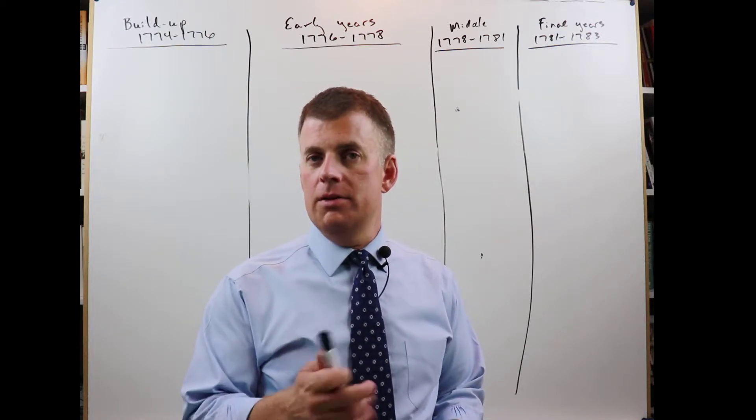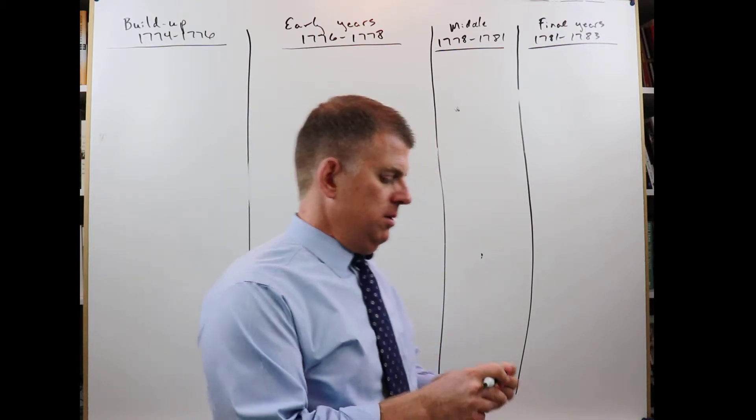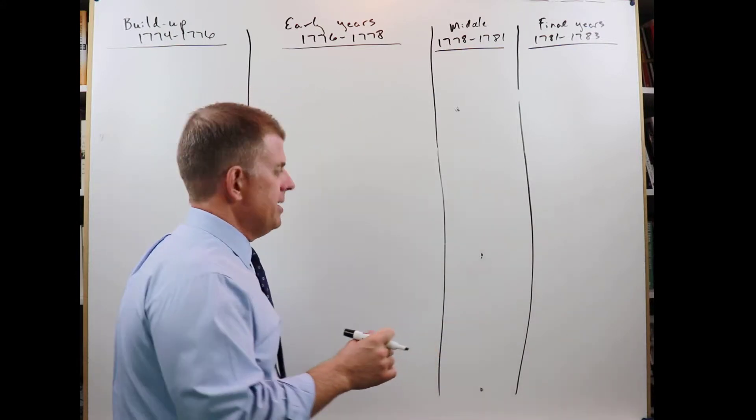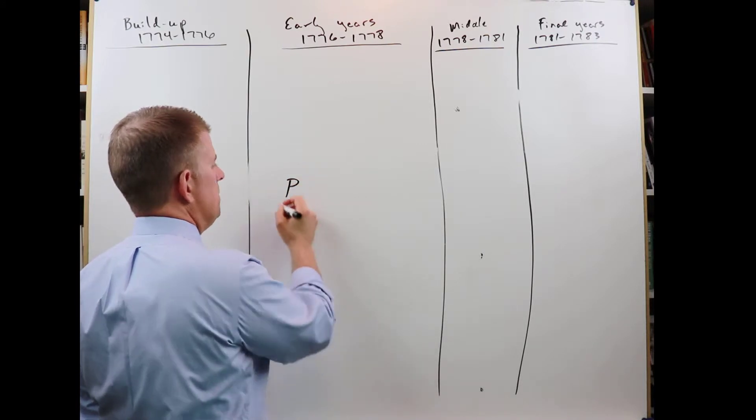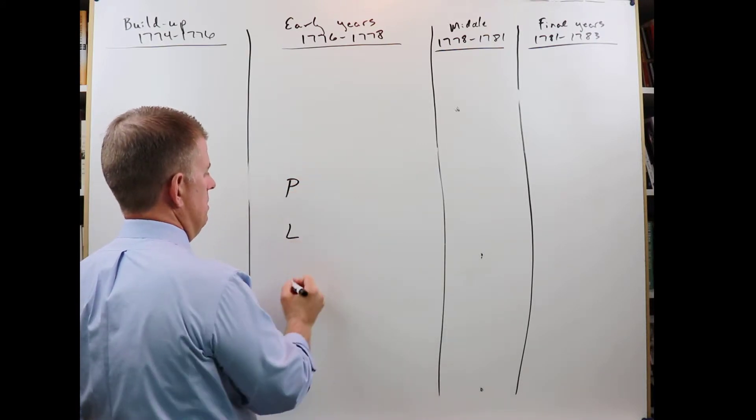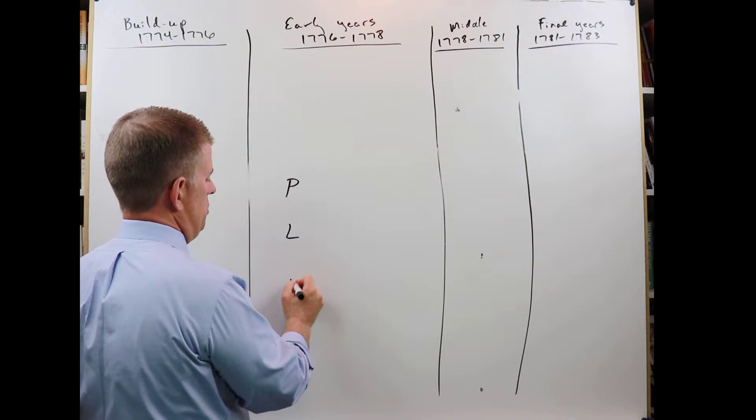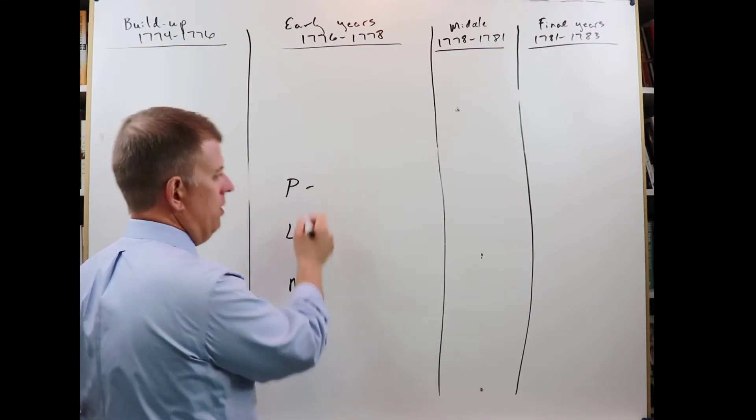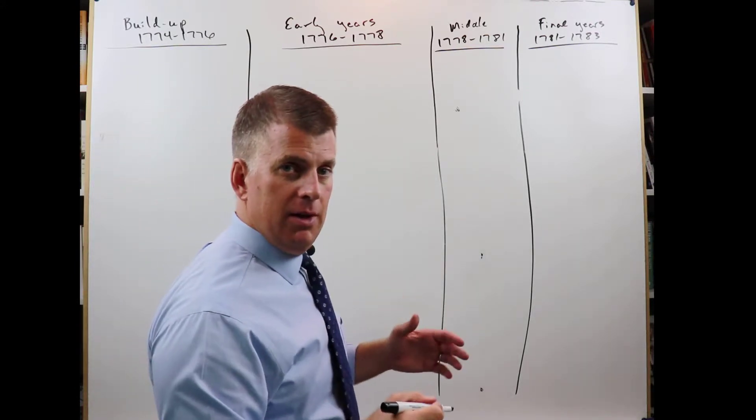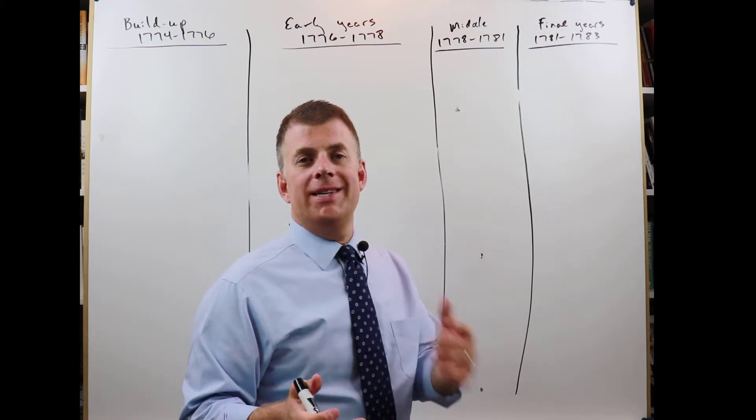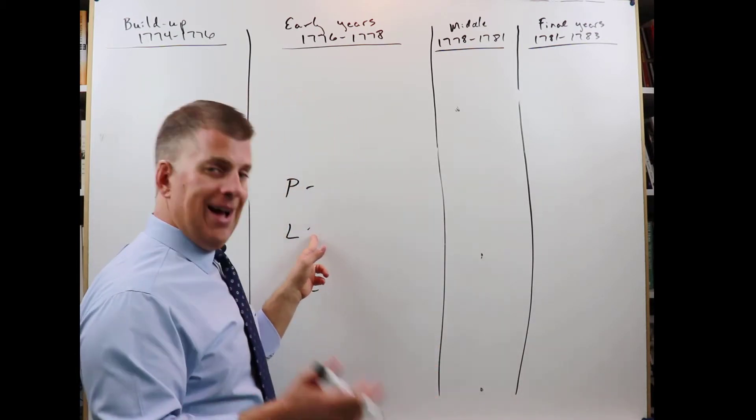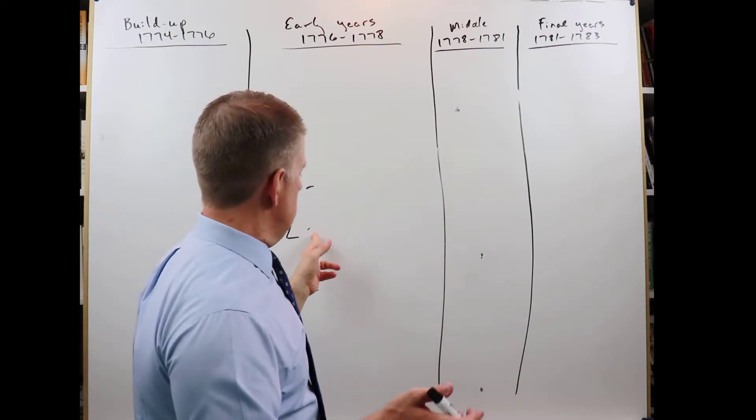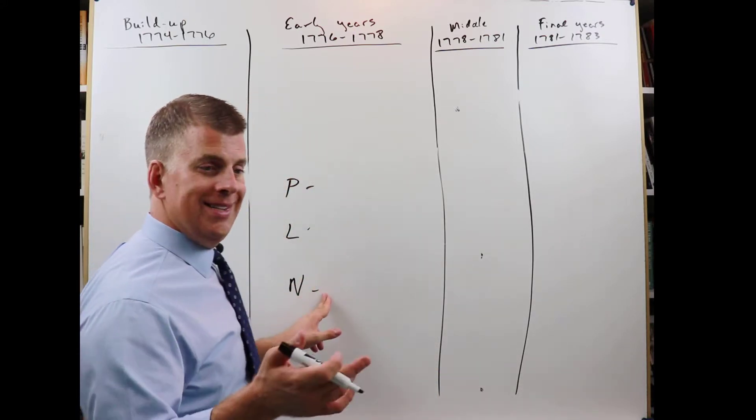And in the colonies, who are we talking about? Well, I don't know if you're going to get asked this, but I think it's kind of interesting. Let's divide people into three groups: Patriot, Loyalist, and Neutral. Patriot, people who supported independence, breaking from England. Loyalist, people who did not support breaking from England. And Neutral, people who didn't take a side.